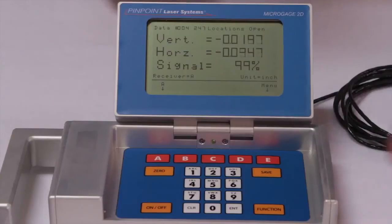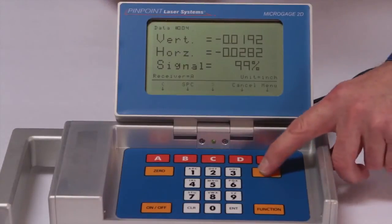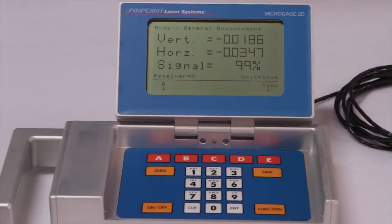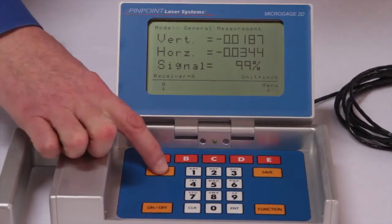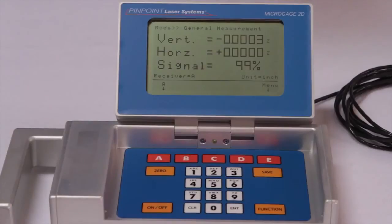The display shows the vertical and horizontal position of the receiver in real time, and also the signal strength from the laser. A zeroing feature on the display allows you to reset the receiver readings to zero so that you can make measurements from a reference position on your work surface.